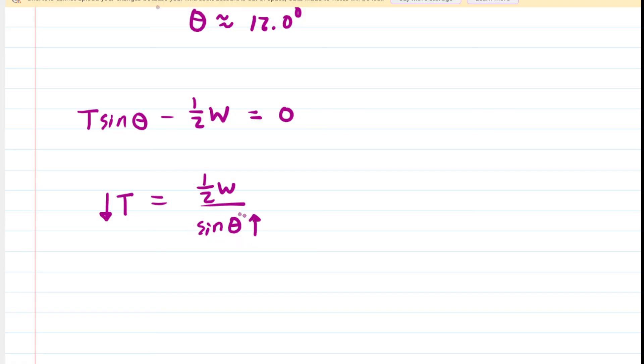Remember, by dividing by a larger number, then your result would be smaller. So to get a smaller tension, we want a larger denominator. So we basically want to make the sine of theta larger. But to make the sine of theta larger means that we want to make theta larger.